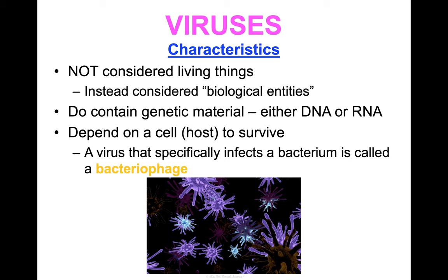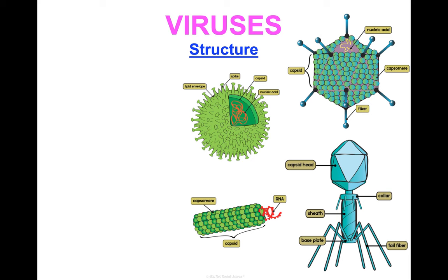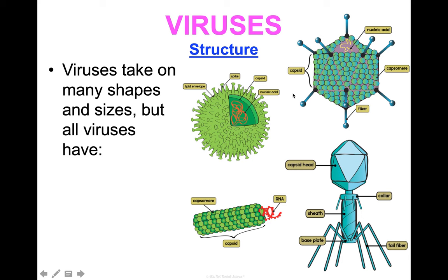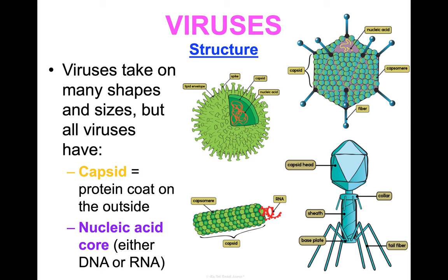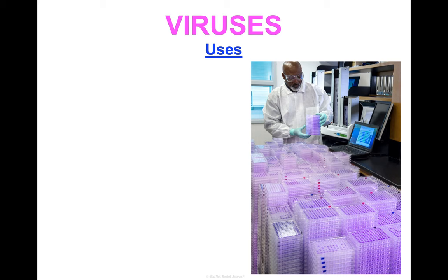An important term: a virus that specifically infects a bacterium is called a bacteriophage. Note that any cell could be a host to a virus — it doesn't have to be a bacterium. But most viruses only infect specific cells. For instance, HIV in humans only affects human T cells. As for structure, there is a lot of variety — viruses can take many different shapes and sizes. But the main two components are a capsid, which is a protein coat on the outside, and a nucleic acid core — either DNA or RNA — on the inside. No cell membrane, no cytoplasm, no ribosomes, because they are not cells and not living things.